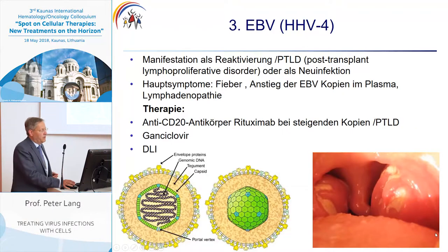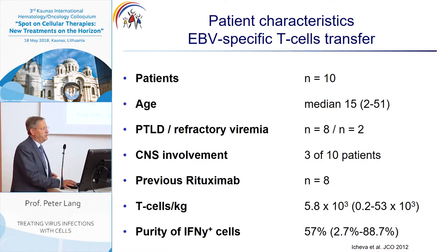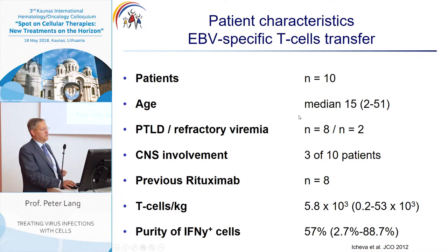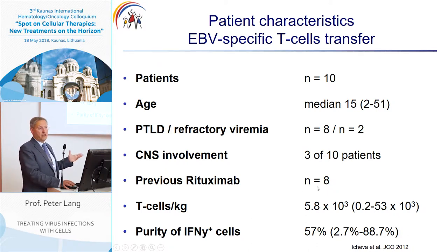The third example is EBV. Here you can see the patient characteristics for those who received an EBV-specific T cell transfer. We have a cohort of 10 patients, again children and adults. Eight patients had PTLD, two had refractory viremia, CNS involvement was present in three patients, and eight patients had received rituximab prior to T cell transfer and were refractory.